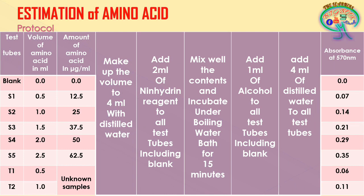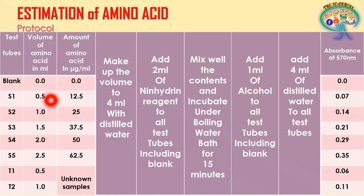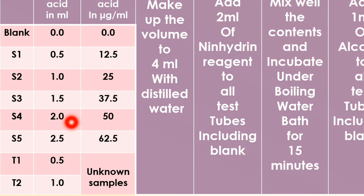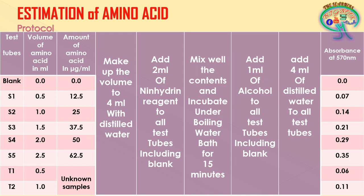After adding the standard series and samples, make up the volume to 4 ml with distilled water. The blank receives 4 ml of distilled water; for the standard tubes, the remaining volume of distilled water is added (e.g., 3.5 ml for the 0.5 ml standard tube, 2.5 ml for the 1.5 ml tube, etc.). Samples T1 and T2 receive 3.5 ml and 3.0 ml of distilled water respectively.